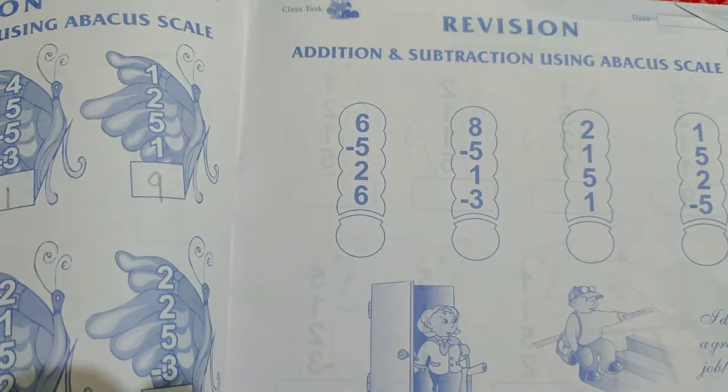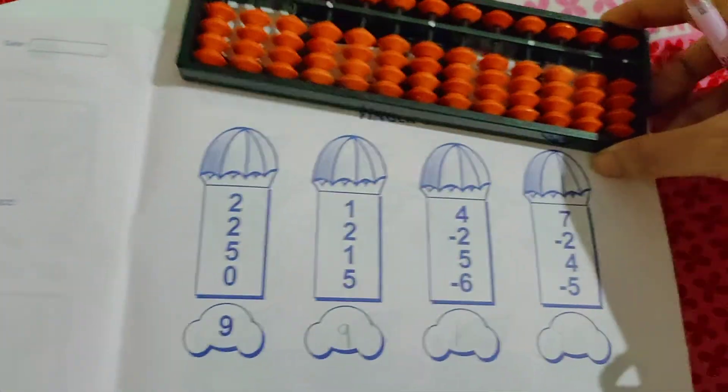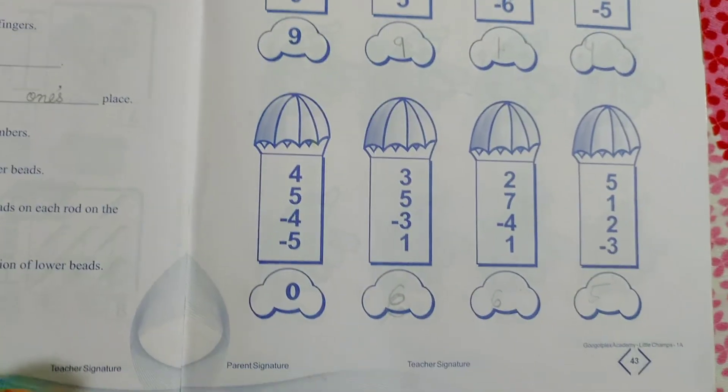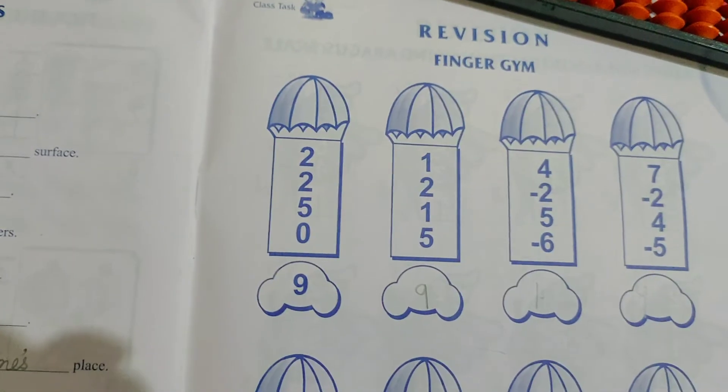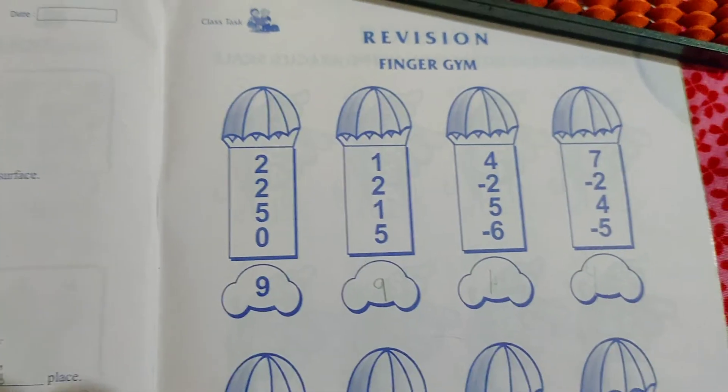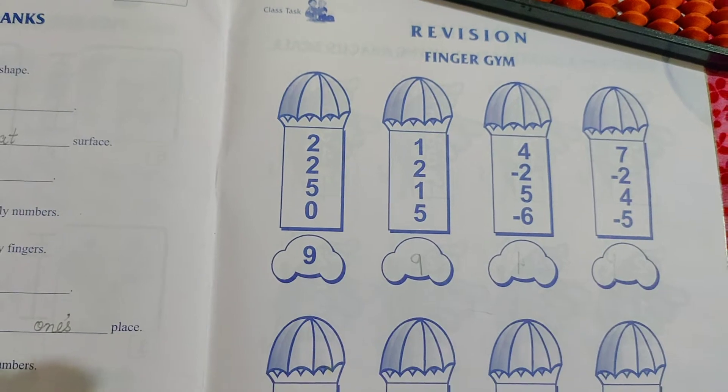Good morning my dear students. So this is your 1A book. 1A book revision work I am doing. This is page number 43. You can see and practice. This one is addition subtraction given with finger gym you have to do. You know already finger gym. So let's start.